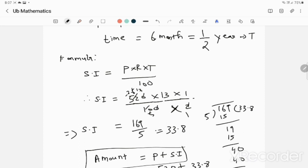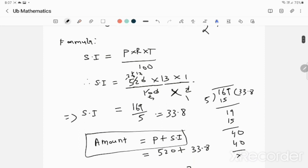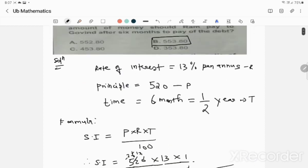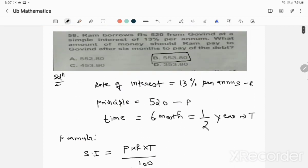169 divided by 5 gives us 33.8, so the interest is 33.8 for half year. The amount you need to pay is the principal plus the simple interest. The principal is 520 and the interest is 33.8, so the total amount is 553.8. Option B is the correct answer, 553.8.